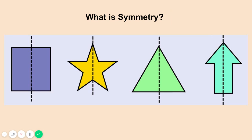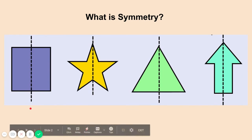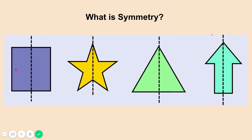First, what is symmetry? To keep it simple, symmetry is when something is the same on both sides. So all of these shapes here have a line going right through the middle of them to show that on one side and the other side it's the same.